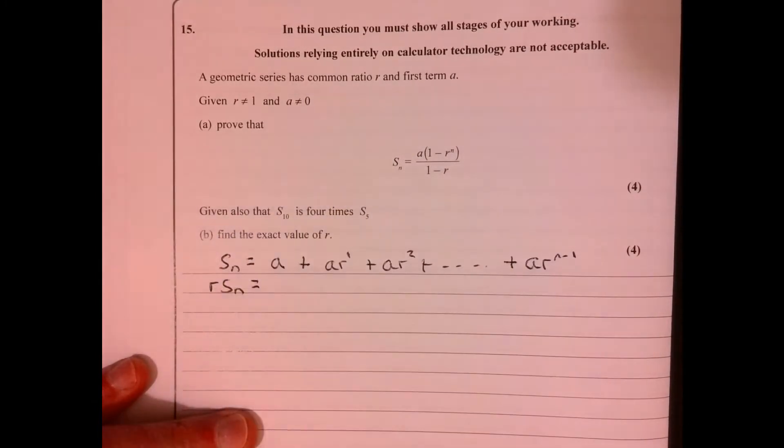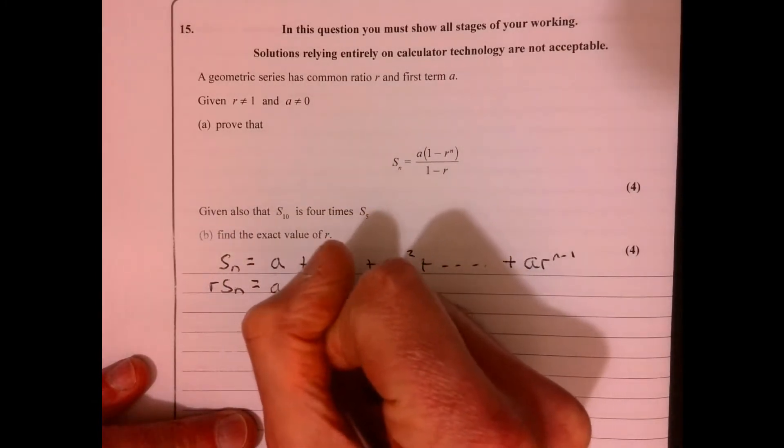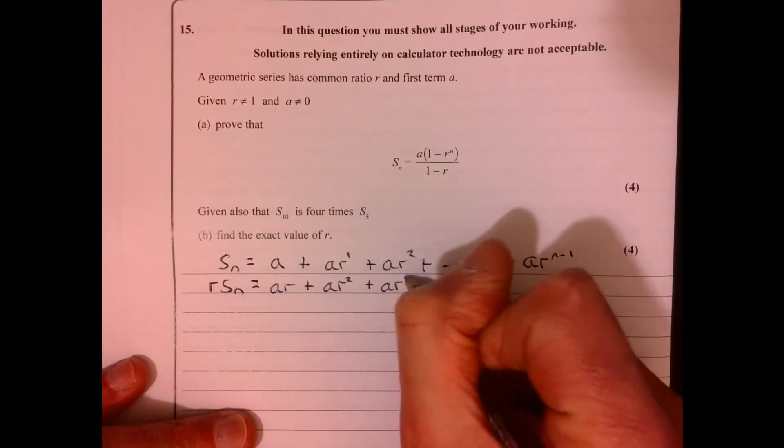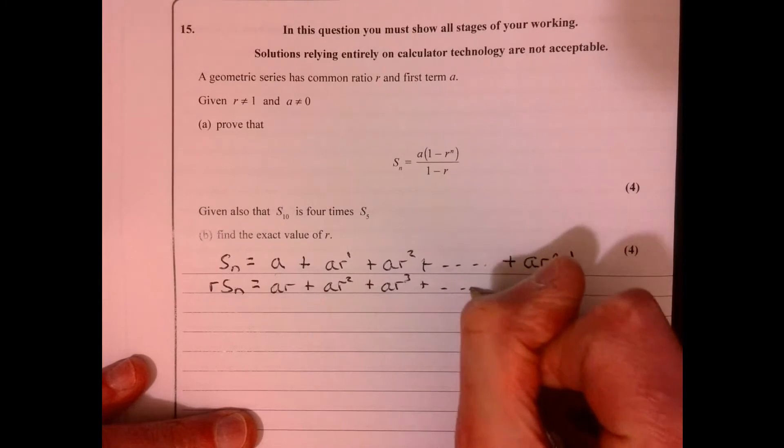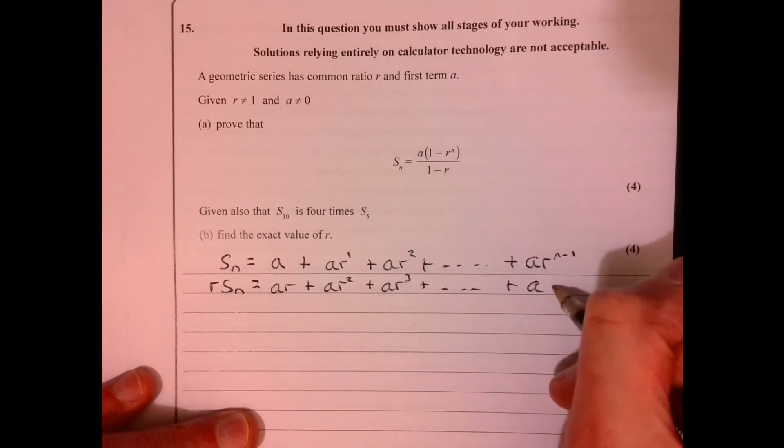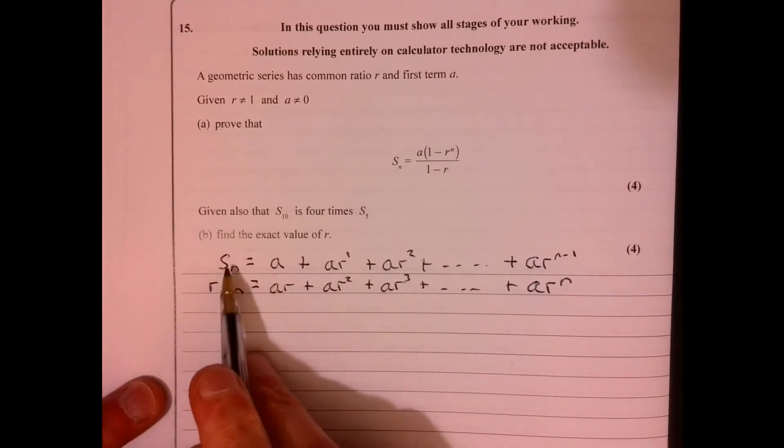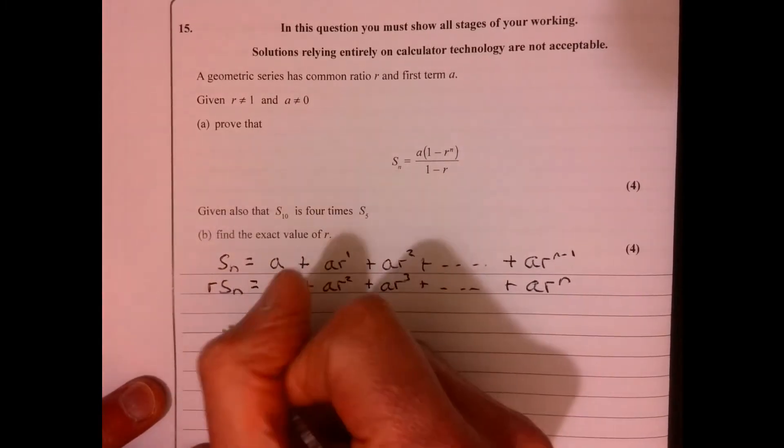We're going to have ar plus ar squared plus ar to the power of 3, and then the last one would be ar to the n. Right, now imagine what you're going to get if you do this one, take away this one.